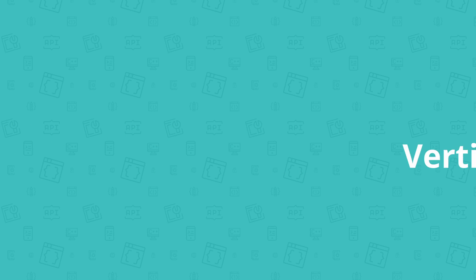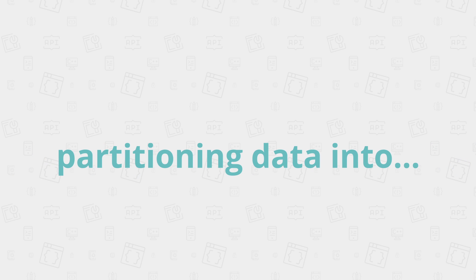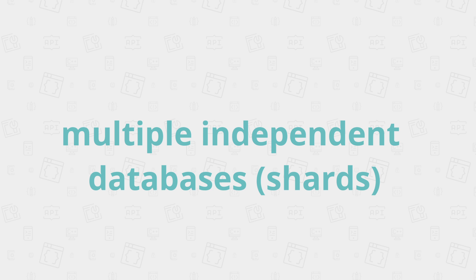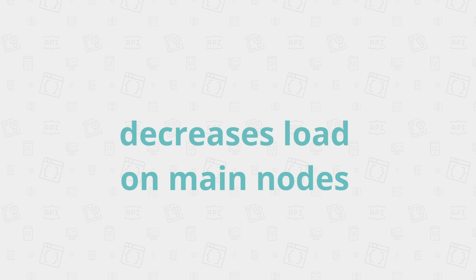Once the economical limit of vertical scaling is hit, database sharding is the next best option. Database sharding follows the idea of partitioning data into multiple independent databases called shards, thereby reducing the load on each individual main node.